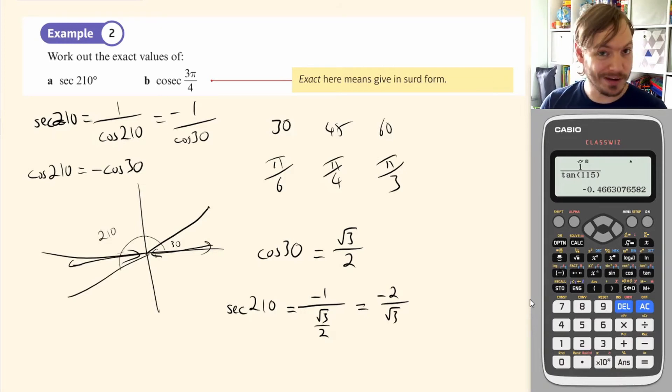But we're going to have to rationalise the denominator. We definitely don't want it in that form. So we're going to times the top and bottom by root 3. So we're going to have negative 2 root 3 over 3.